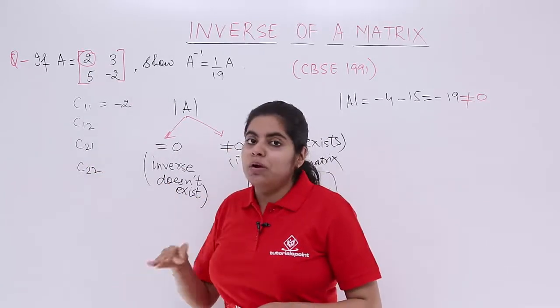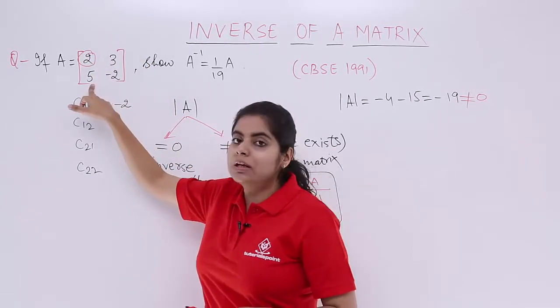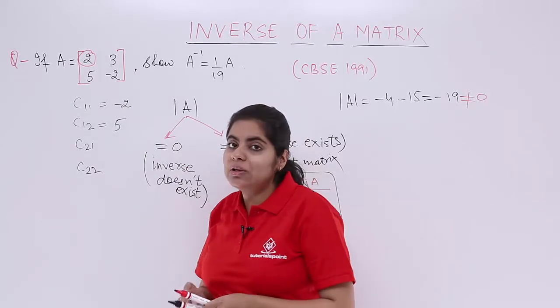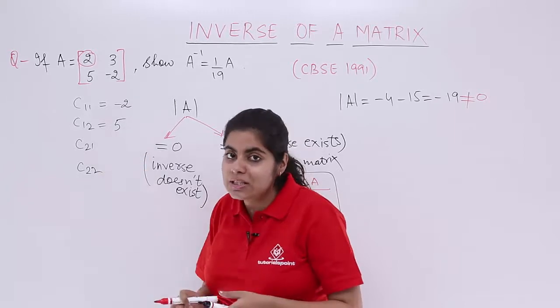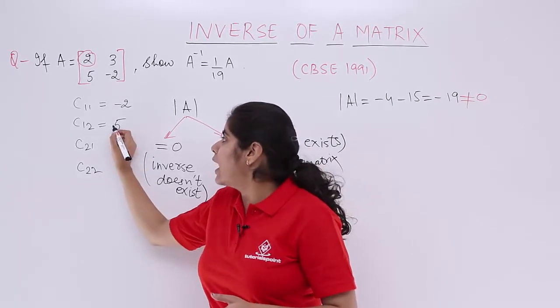Next, C12, first row, second column. We are left with 5 and I know that 1 plus 2 is 3 which is a negative placing sign since it is an odd number. So I have negative 5.